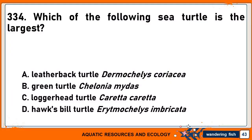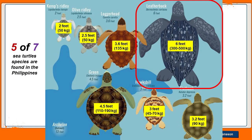Which of the following sea turtles is the largest? A. Leatherback Turtle. B. Green Turtle. C. Loggerhead Turtle. Or D. Hawksbill Turtle. The correct answer is A. Leatherback Turtle, or Dermochelys coriacea. There are seven sea turtle species worldwide, and the leatherback turtle is the largest. They can grow up to 188 cm in shell length and weigh 500 kg. Among the seven sea turtle species, Kemp's Ridley or Lepidochelys kempii is the smallest, growing up to 2 feet and weighing only 50 kg.